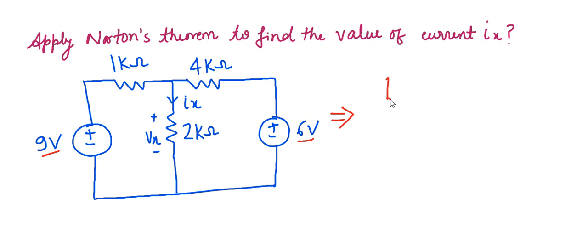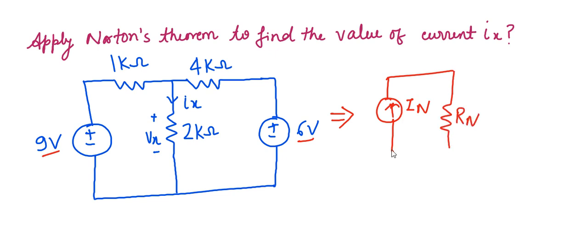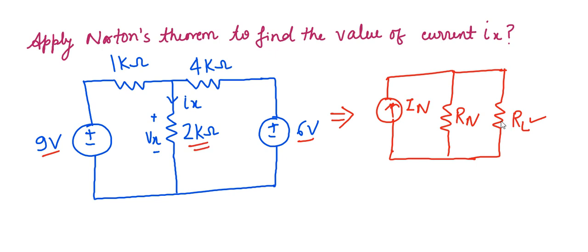In the Norton equivalent circuit there should be one Norton's current, known as IN. IN should be in parallel with the Norton equivalent resistance, and in the end there should be one load resistance in parallel. The RL value is the resistance across which we need to obtain the current — here RL is 2 kilohm, since we need to find current IX across the 2 kilohm resistance.